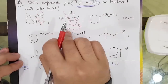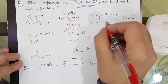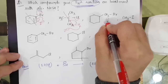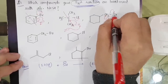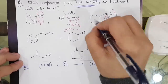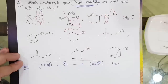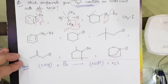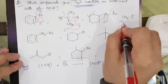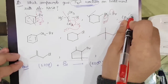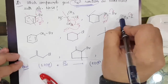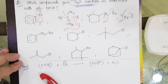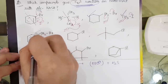Moving to the next compound: if the nucleophile comes, it can very easily attack this carbon and take out the bromine, giving the SN2 reaction — this is correct. For CH3I, Z minus will go and attack, taking out I minus, giving the SN2 reaction mechanism.